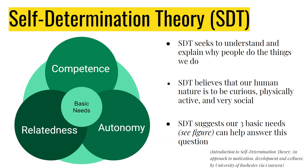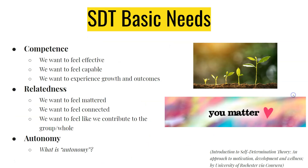And then self-determination theory. Self-determination theory seeks to understand and explain why people do the things we do. It believes that our human nature is to be curious, physically active, and very social. Self-determination theory suggests that our three basic needs can help us answer why we do the things we do. Our three basic needs are competence, relatedness, and autonomy. As we go through these terms, try to reflect on how you can craft physical activity experiences throughout your life that will allow you to feel competent, related, and autonomous.